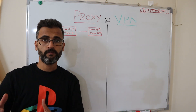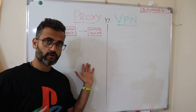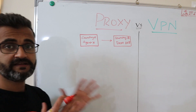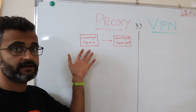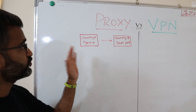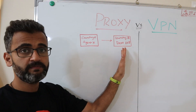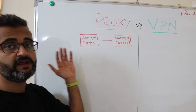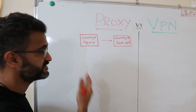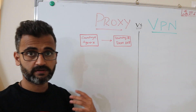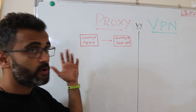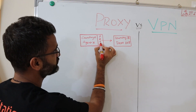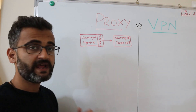Suppose there is Country A with its secret services, and an agent from that secret service wants to get some information from Country B — specifically from a department called Department 108. But Country A cannot directly access Country B because this information is banned or restricted.